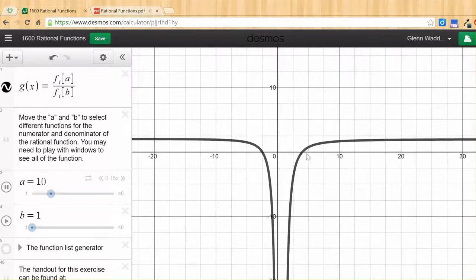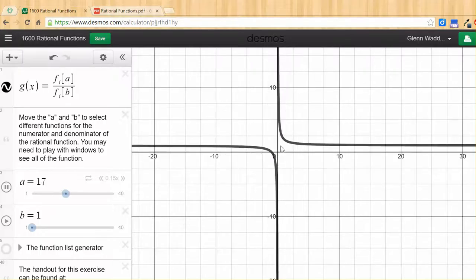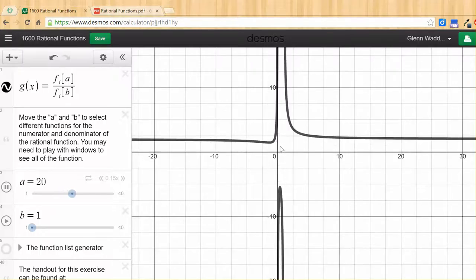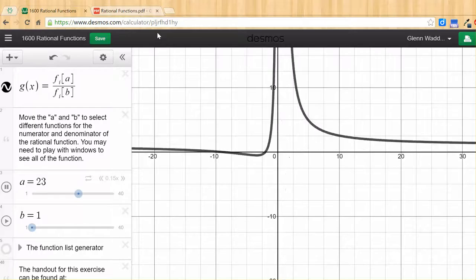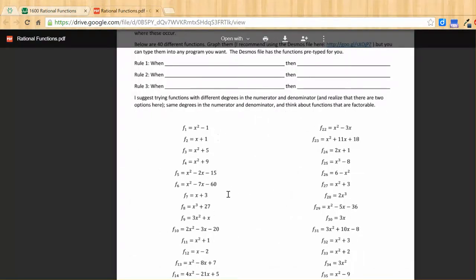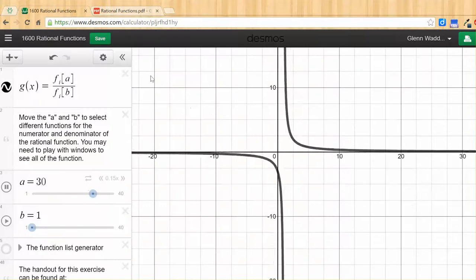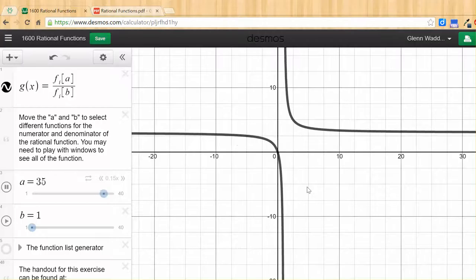for slant asymptotes, horizontal asymptotes, and vertical asymptotes. When, just by looking at the functions, can you look at the function numerator and denominator and tell me what the graph should look like and make a prediction.